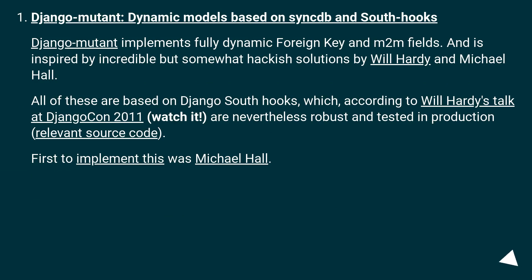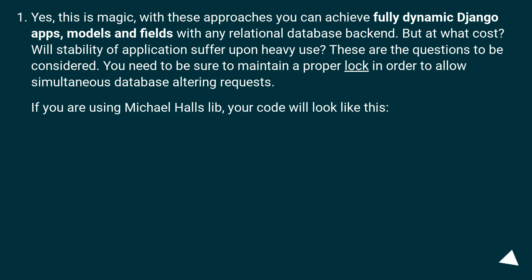Django Mutant — dynamic models based on Synced and South hooks: Django Mutant implements fully dynamic foreign key and M2M fields, and is inspired by incredible but somewhat hackish solutions by Will Hardy and Michael Hall. All of these are based on Django South hooks which, according to Will Hardy's talk at DjangoCon 2011, are nevertheless robust and tested in production. Relevant source code was first implemented by Michael Hall. Yes, this is magic — with these approaches you can achieve fully dynamic Django app models and fields with any relational database backend, but at what cost? Will stability of applications suffer upon heavy use? You need to be sure to maintain a proper lock in order to allow simultaneous database-altering requests.